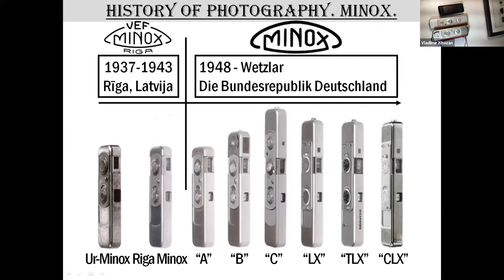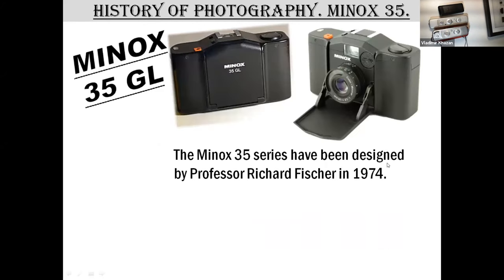The other models were versions of the LX: TLX in chrome, TLX in titanium. To summarize the Minox timeline: the Riga Minox was produced until 1943, and in 1948 production moved to Germany where all other cameras were made.